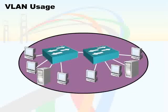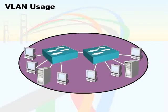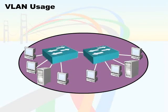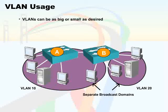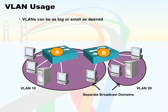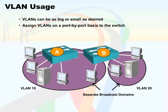In this example, I've got the same number of hosts, the same servers, and the same number of switches. But I've broken up this network into two different segments utilizing VLANs — VLAN 10 and VLAN 20. VLANs can be as big or as small as you'd like; you just decide how large you want your broadcast domain to be. You create VLANs by assigning them on a port-by-port basis to the switch, and you can have as many or as few ports allocated to a VLAN as you'd like.